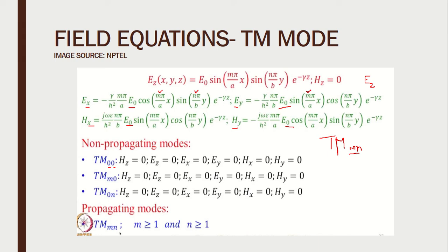Substituting M=0 and N=0, sin 0 becomes 0 in each equation, so EX, EY, HX, HY, and EZ all vanish to zero. When M=0 and N=0, all the field components become totally zero, and such a mode is not possible. We call these modes non-propagating modes, where none of the field components are present.